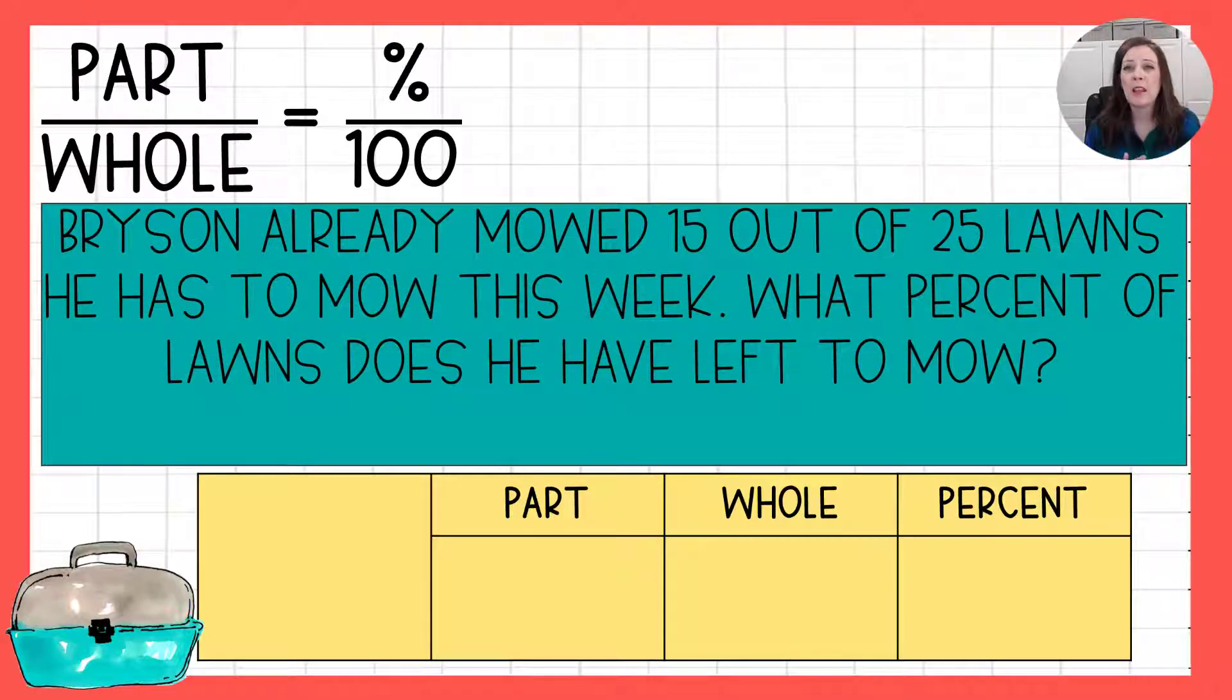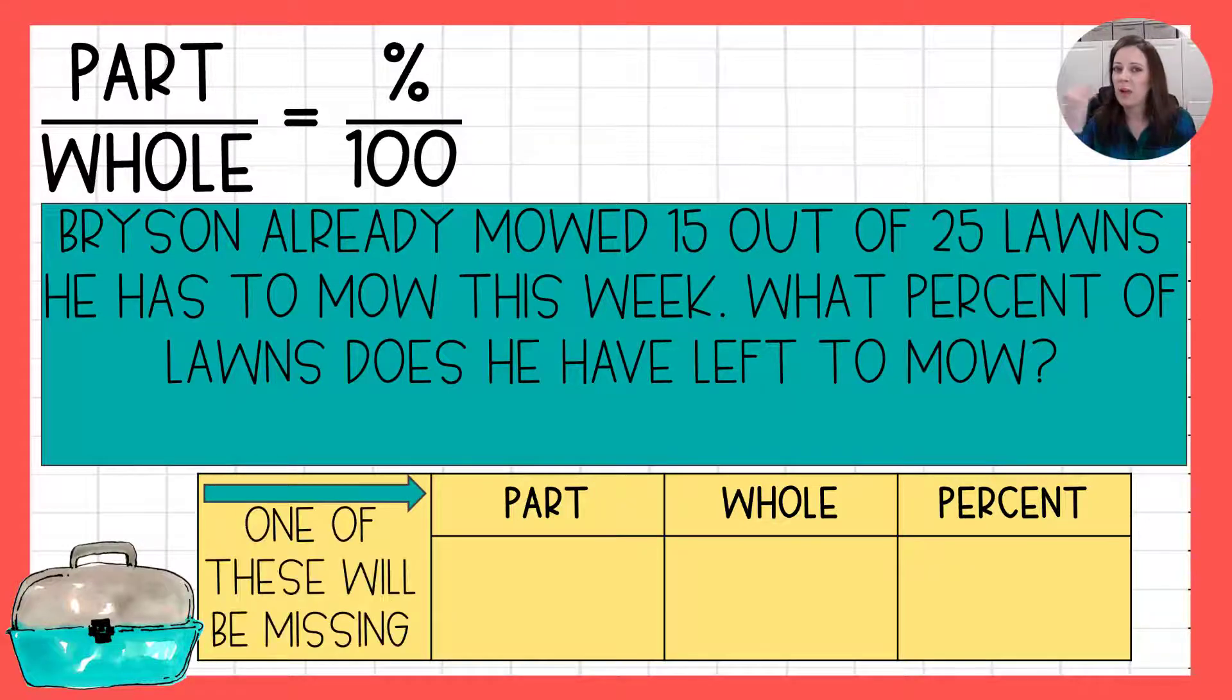Next question. Bryson already mowed 15 out of 25 lawns he has to mow this week. What percent of lawns does he have left to mow? So I'm just going to tell you right now this one's a slight bit different and will trick you. But let's just go ahead and remind ourselves something will be missing. What is the part? It says he's already mowed 15 out of 25 lawns. How many does he have left to mow?